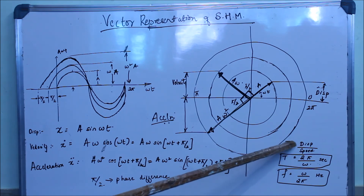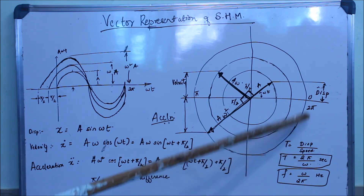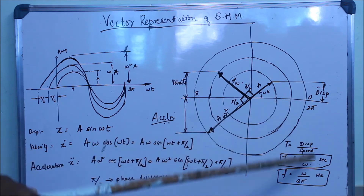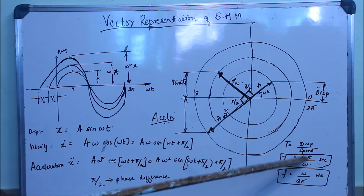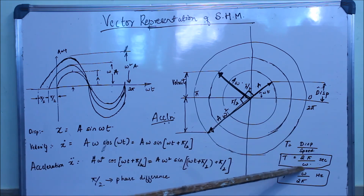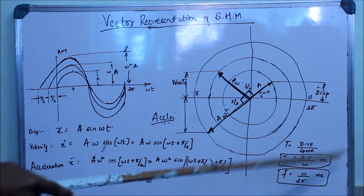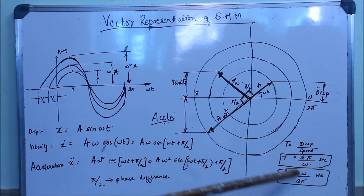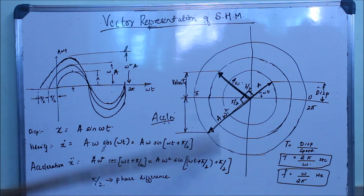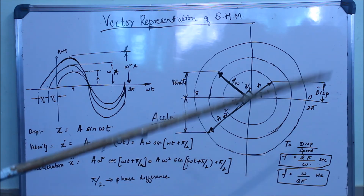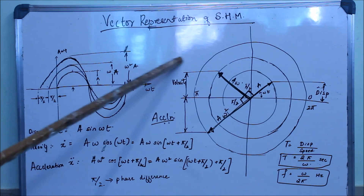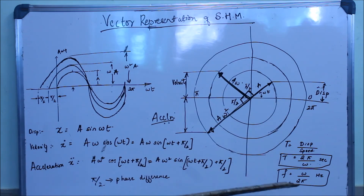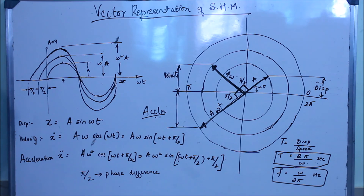The time period T is displacement divided by speed: T = 2π/ω. Frequency is the reciprocal of the time period: f = ω/2π. Frequency is the number of cycles per second — if one cycle completes in one second, the frequency is one hertz.